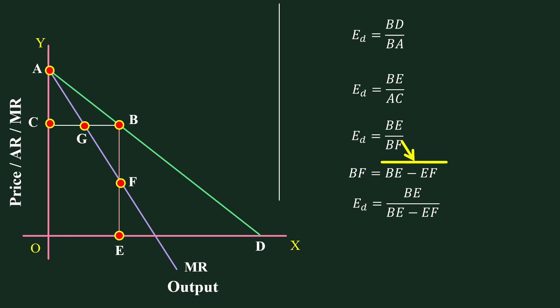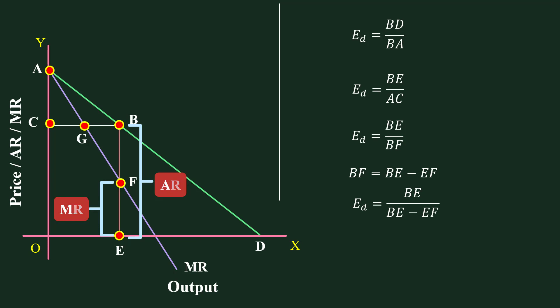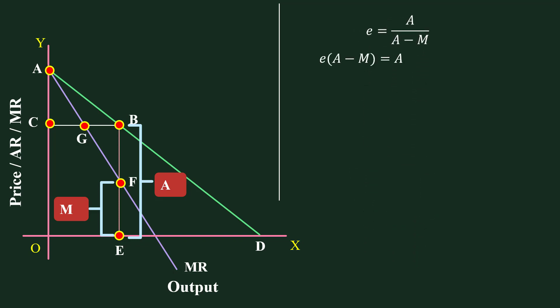Now it is time to introduce Average Revenue and Marginal Revenue. The height BE represents Average Revenue, and the height EF represents Marginal Revenue. Let us use A for Average Revenue, M for Marginal Revenue, and E to represent Elasticity of Demand. Using these symbols, the formula becomes E = A / (A − M). Rearranging: E(A − M) = A, so EA − EM = A. Bringing A to the left-hand side: EA − EM − A = 0.